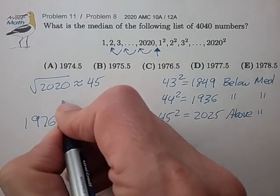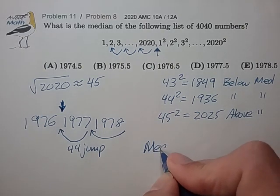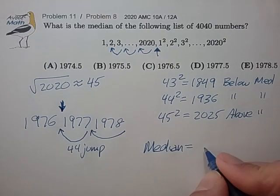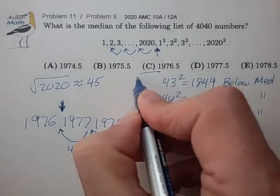So the median is going to lie right in between 1976 and 1977. So we split the difference, and the median is 1976.5 for choice C.